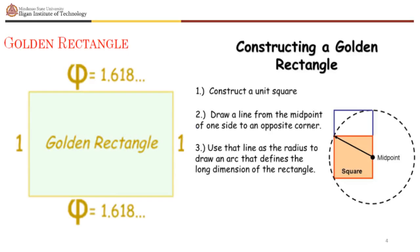To construct a golden rectangle, perform the following steps. First, construct a unit square. The second step is to draw a line from the midpoint of one side to an opposite corner. Then the third step is to use that line as the radius to draw an arc that defines the long dimension of the rectangle. Now you have a golden rectangle.